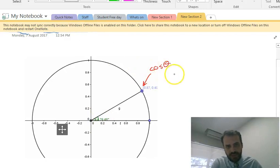Now similarly, this is equal to sine theta. So the value of that point, no matter where it is, is cosine theta, sine theta.